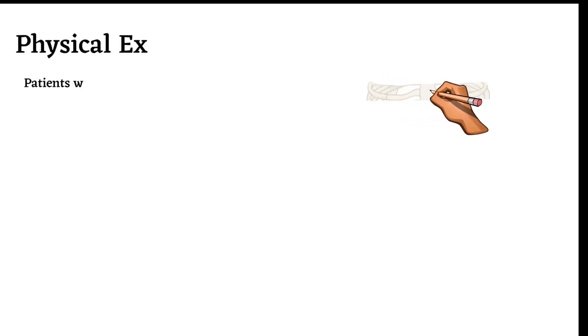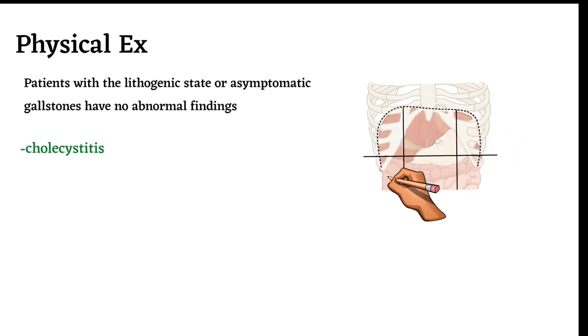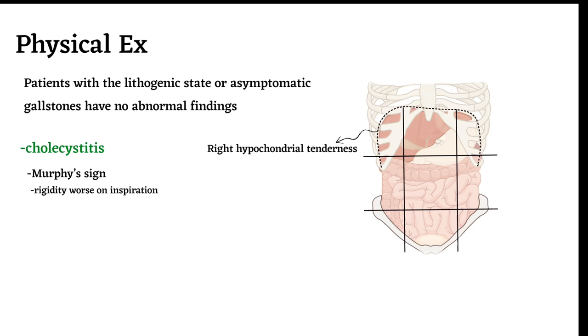Patients with lithogenic states or asymptomatic gallstones have no abnormal findings. But in cholecystitis, which is one presentation of gallstones, there is right hypochondrial tenderness, rigidity worse on inspiration (Murphy's sign), and fever is present, but rigors are unusual.